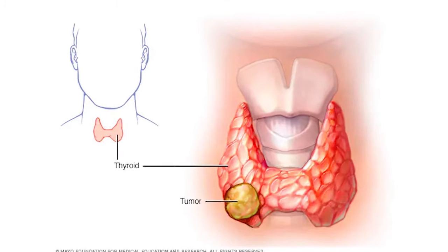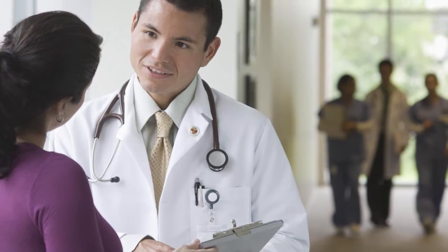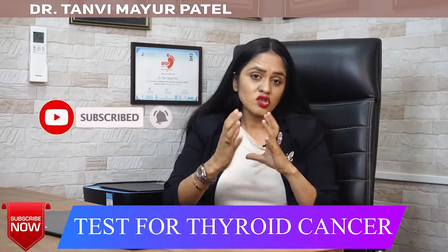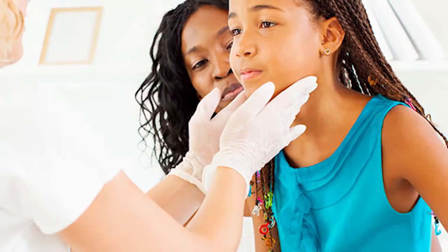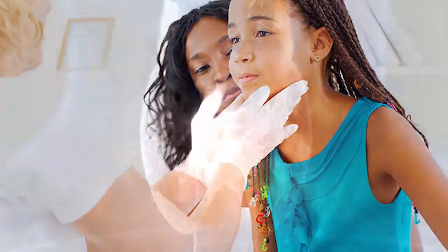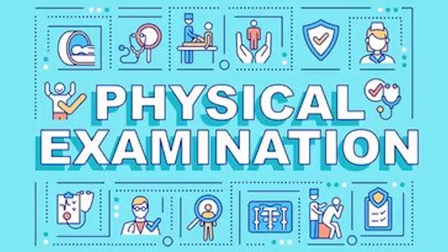Let's continue with today's topic — how do we decide and confirm that a person has thyroid cancer or not. The very first step is your general body history, which you share with your doctor. Your doctor will ask about various body symptoms, complaints, or issues you are facing. They will also ask whether you were ever exposed to any kind of radiation, and whether your family has any history of thyroid cancer, as medullary thyroid carcinoma can run in families.